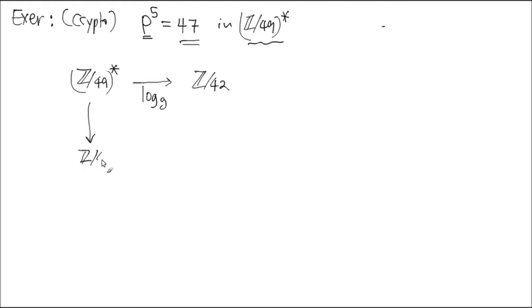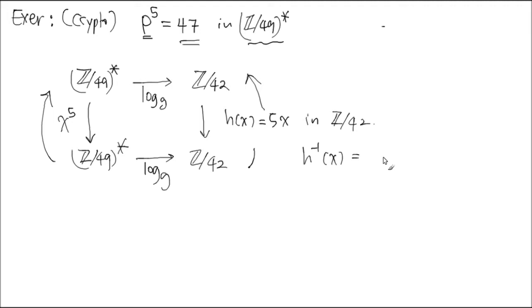So what is the encryption map here? X raised to 5th power. Then we go here by log G map and Z mod 42. Then who remembers this vertical map here? 5 times X in what world? Z mod 42. This is a commutative diagram. If you want to find the inverse map so that you figure out inverse so you recover P, that inverse is an inverse map in here. That's the power of the commutative diagram. So what is this H inverse X? Simply 5 inverse X.